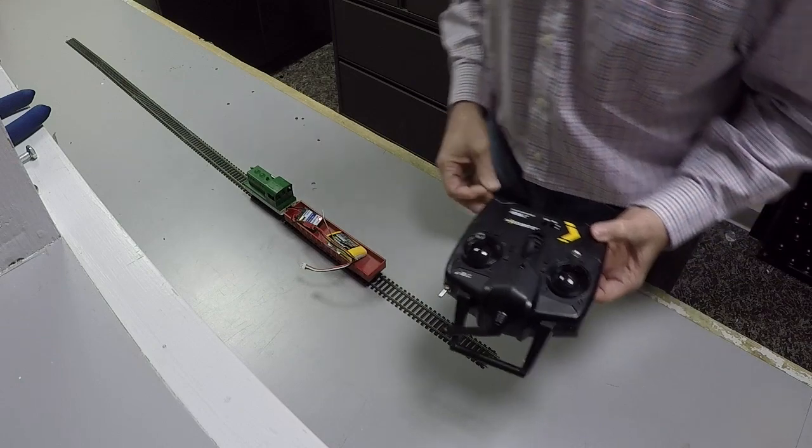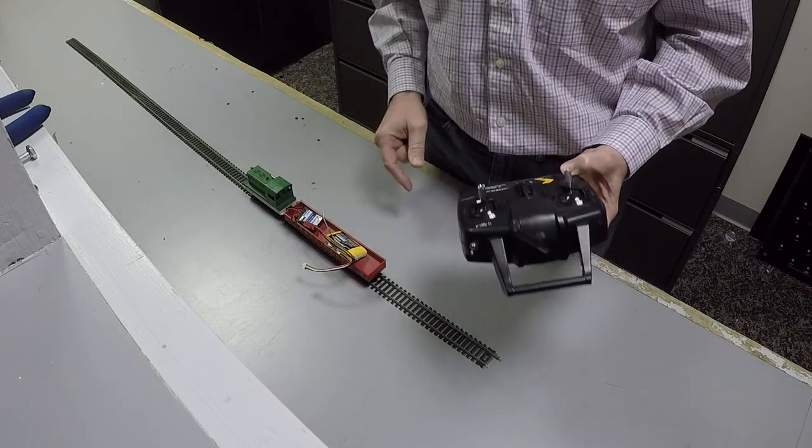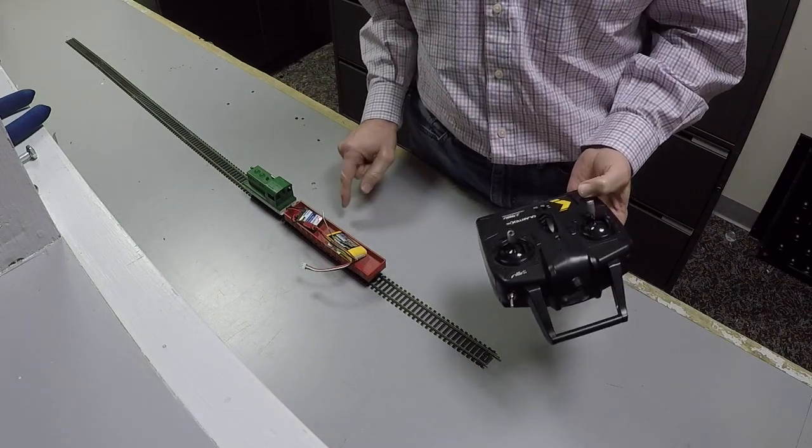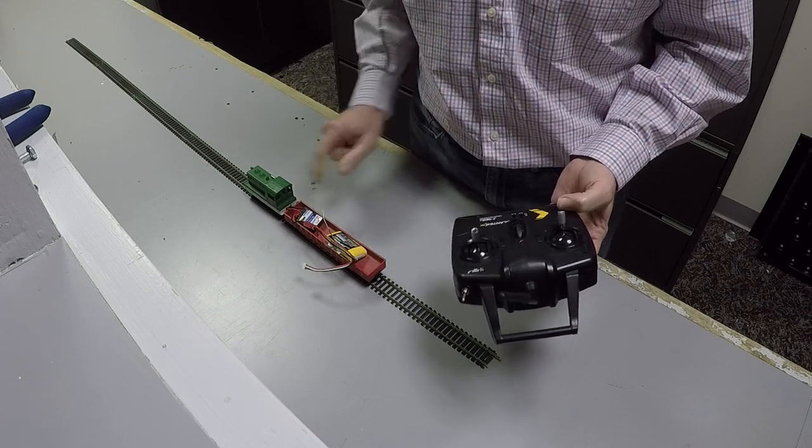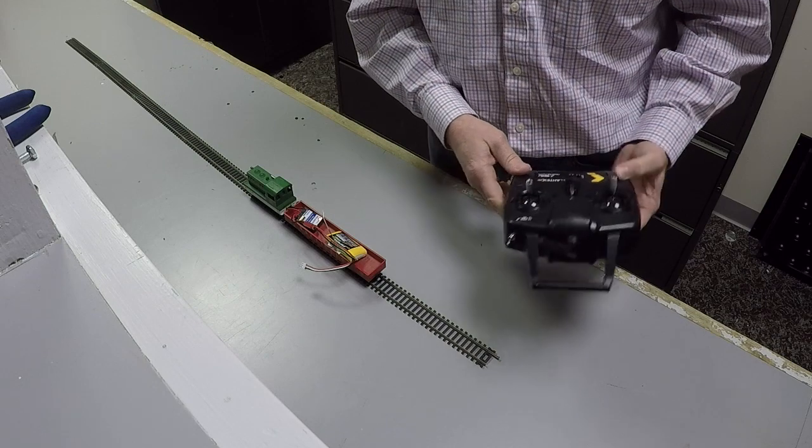So if anyone has any ideas on maybe somehow I can use that second channel, wire this differently and get this locomotive to run in reverse with this setup.